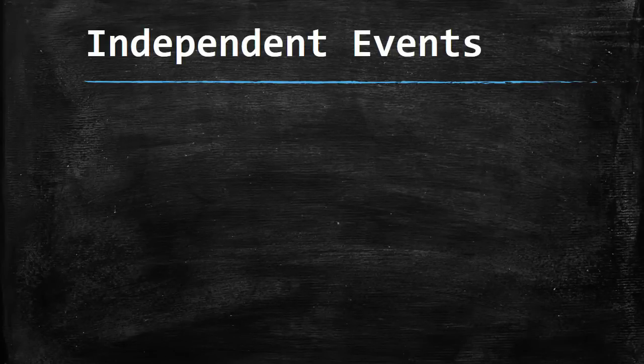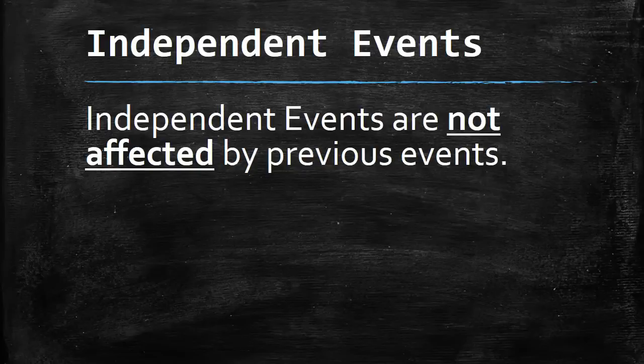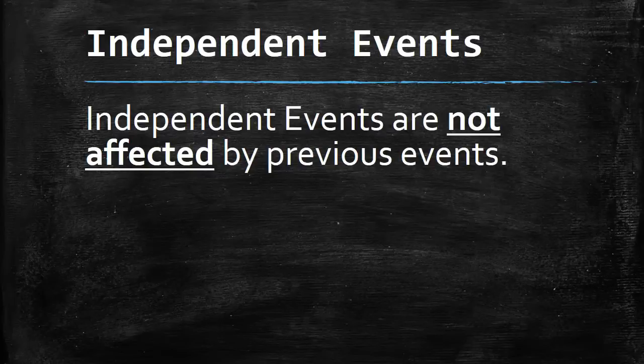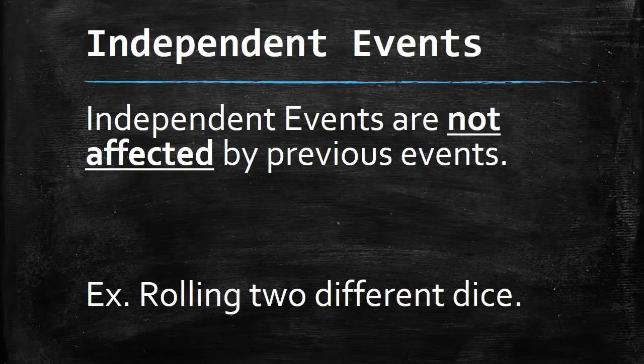We also need to look at what's called an independent event. An independent event is a special type of event that is not affected by previous events. When you flip a coin, the next time you flip a coin, it doesn't matter what you had before. It's totally independent. It's not affected by anything that happened in the past.